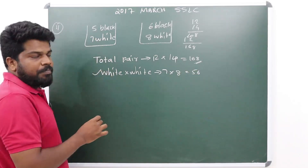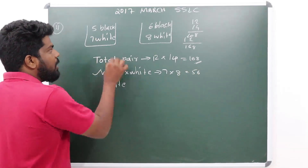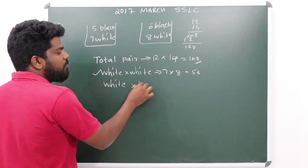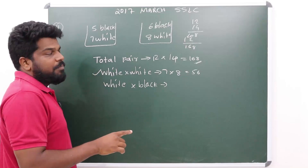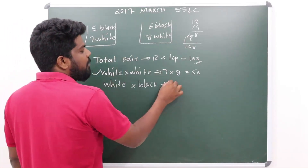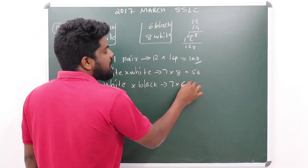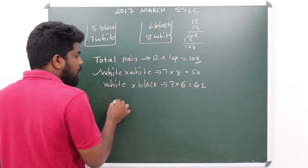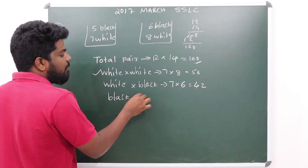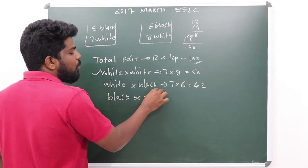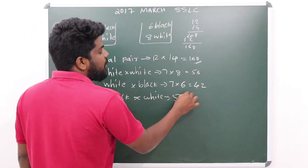There are white beads and black beads in the box. The number of white beads is 7, and the number of black beads is 6. The number of ways to select one black and one white is 6 × 7 = 42. One of the black beads counts as 5, and one of the white beads counts as 8.